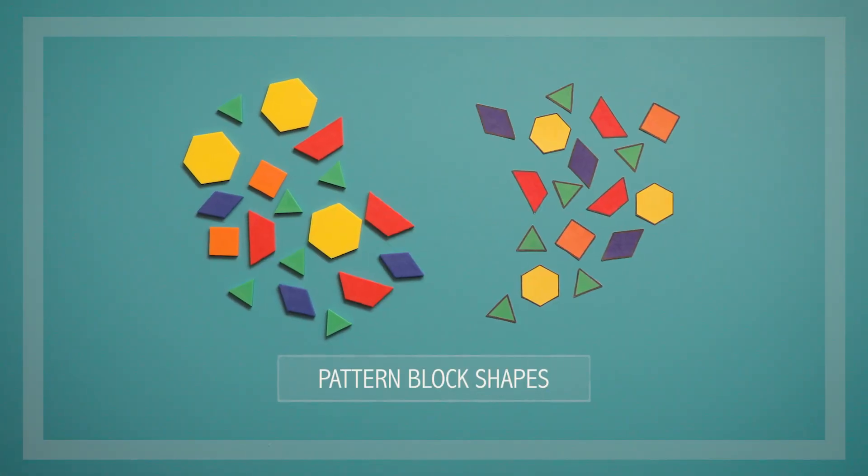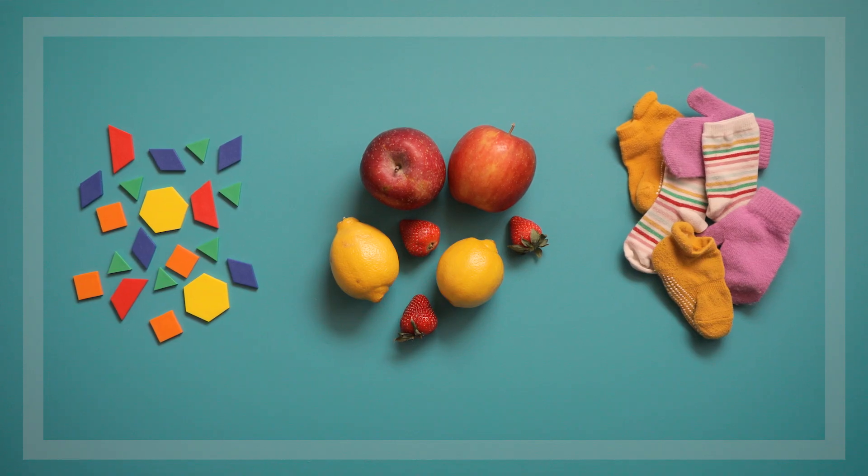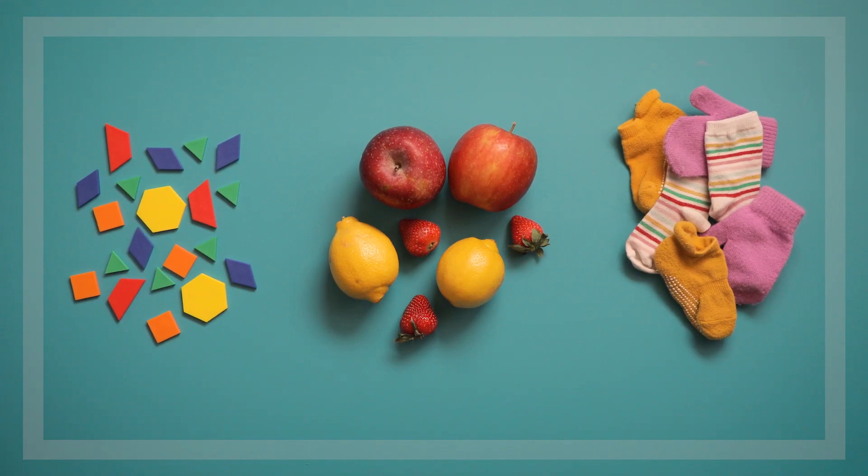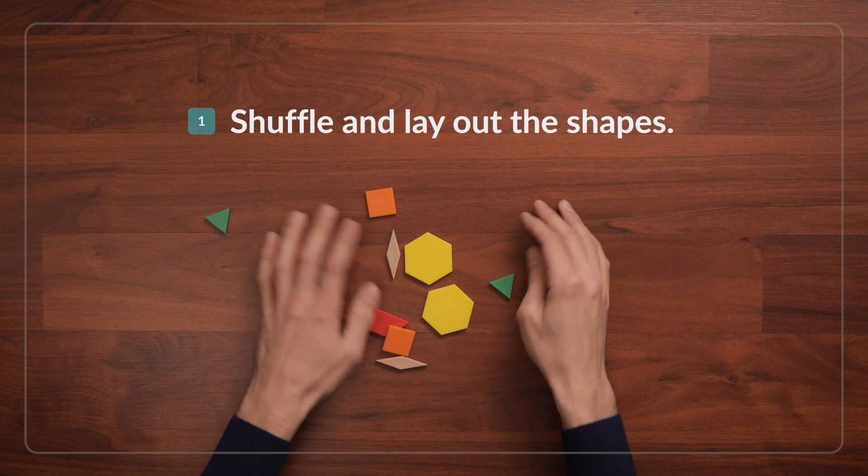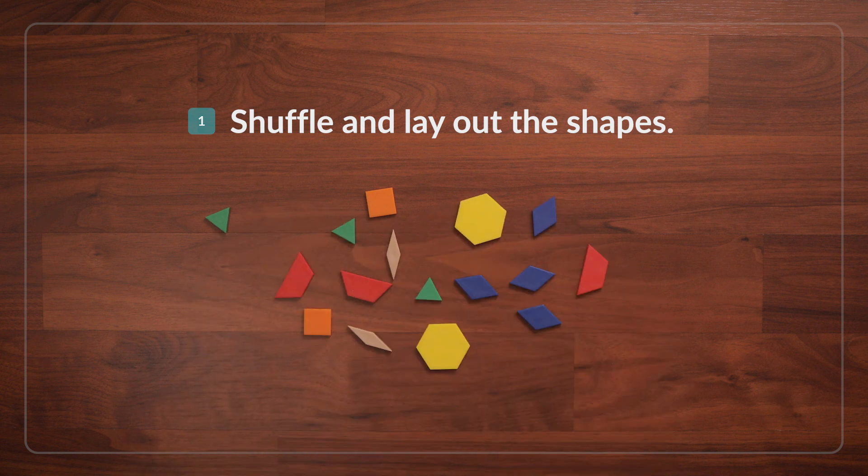To play this game, you can use plastic pattern blocks, paper shape cutouts, or other toys you might have around the house. But you will need at least two players, because you're trying to match each other's shapes. To get started, first shuffle the pattern block shapes and then place them down on a table or on the floor.